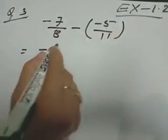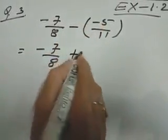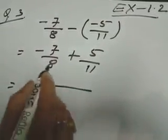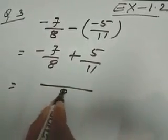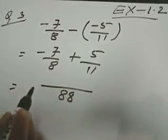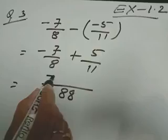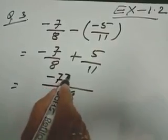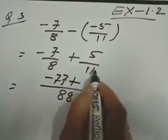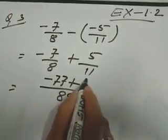Is equal to minus 7 by 8. Minus into minus gives plus 5 by 7. Now LCM of 8 and 7 is 56. Wait — 8 and 11: 88 divided by 8 is 11; 11 into minus 7 is minus 77. Plus 88 divided by 11 is 8; 8 into 5 is 40.